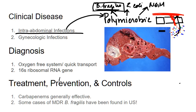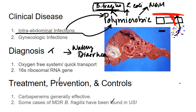When B. fragilis causes infections, it tends to lead to abscess formation — and these abscesses can be polymicrobial. We can see abscesses in the liver, which would certainly be an intra-abdominal infection. You can also see an enterotoxin-producing strain, and when there's an enterotoxin, that typically produces a self-limited watery diarrhea. Generally, that causes gastroenteritis in children younger than five years old.